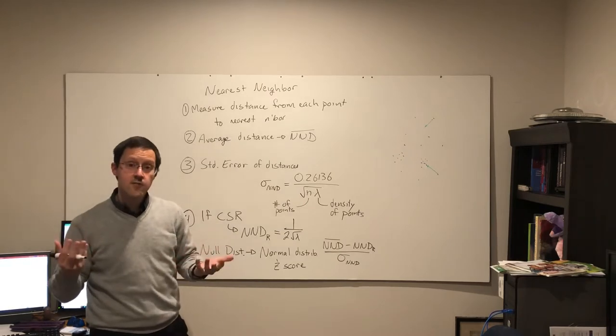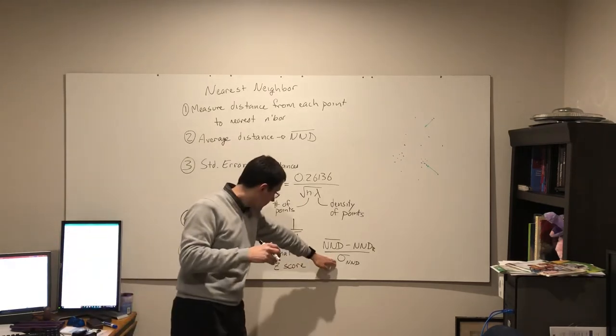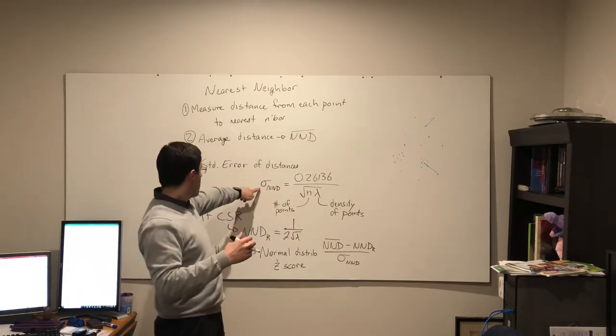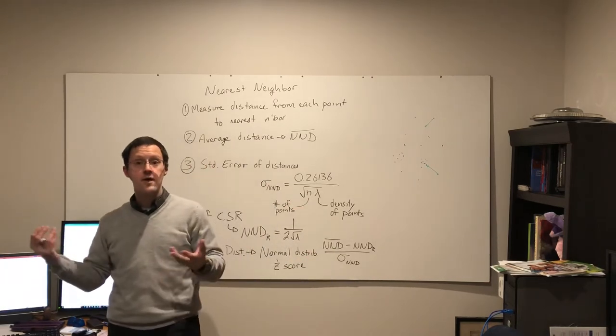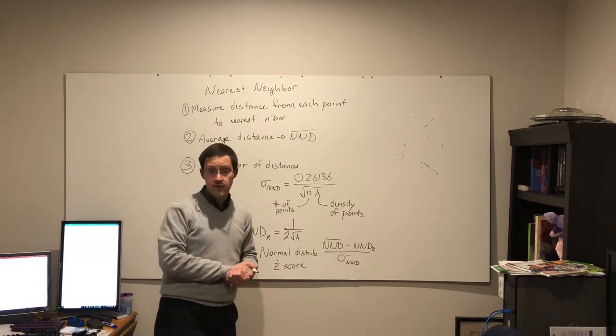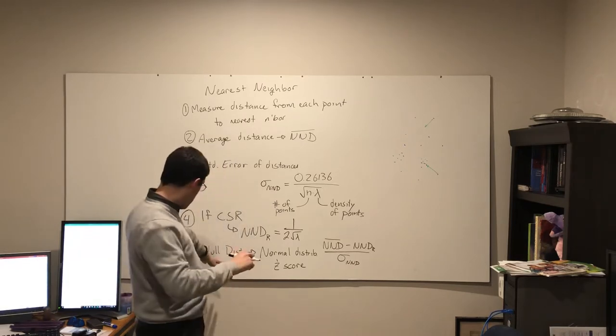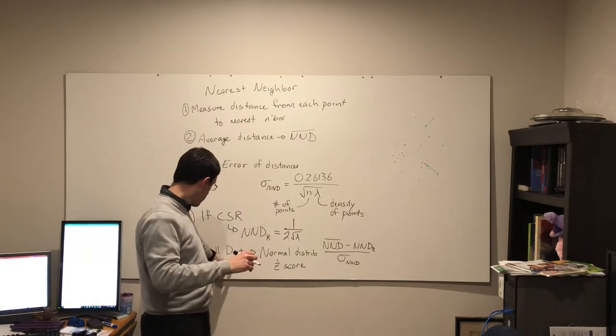Here we have the actual observation of the average distance to nearest neighbor, so the actual value, minus what we expect under randomness, which is going through the density here, this NNDR. As with the z-test, we divide by the standard deviation. Here we divide by the standard error of the distances, again based upon how many there are and how densely packed the points are.